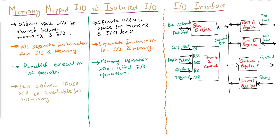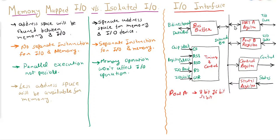Now let us look at the IO interface. Let us first discuss the various components and then understand their meaning. We have a bus buffer, Port A register, Port B register, control register, and status register. The meaning of 'port' here is a group of 8 bits — in most microcontrollers a port is simply 8 input/output lines — so rather than representing individual bits we refer to it as a port.